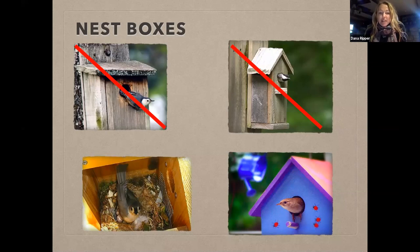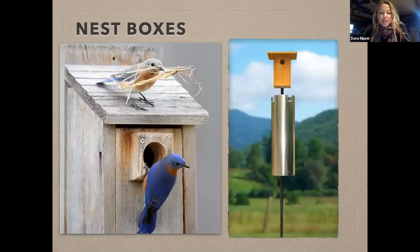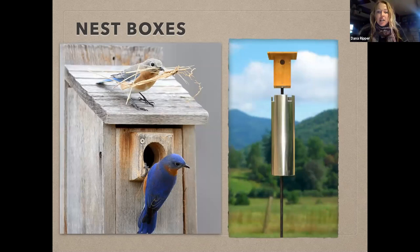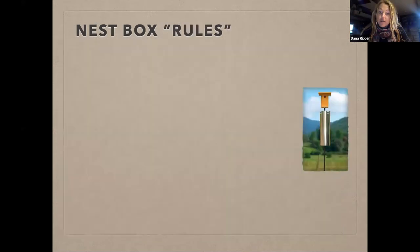Here are our bluebirds, and you can see a big silver stovepipe thing — that is what we call a baffle. The reason it's called a baffle is that its whole point is to baffle predators and not allow them to get into the box.